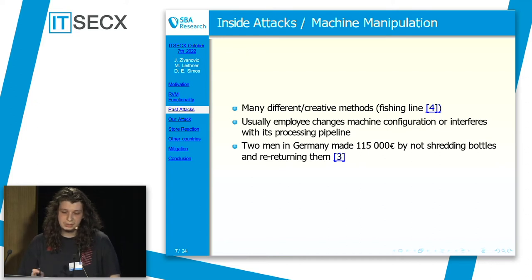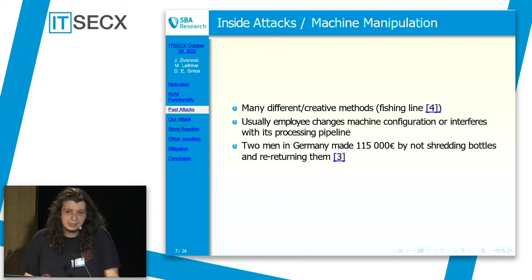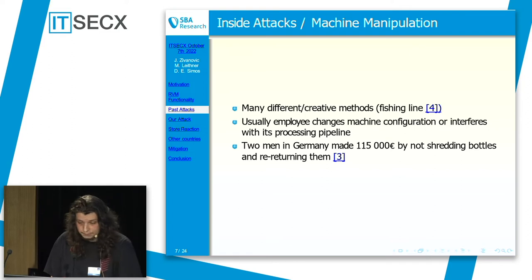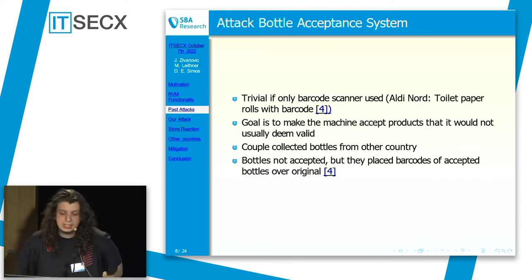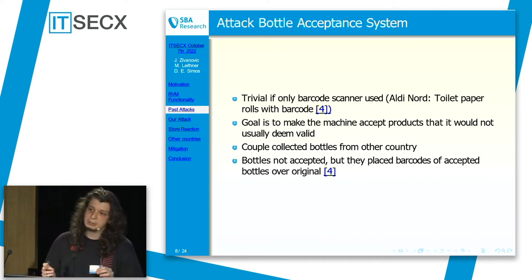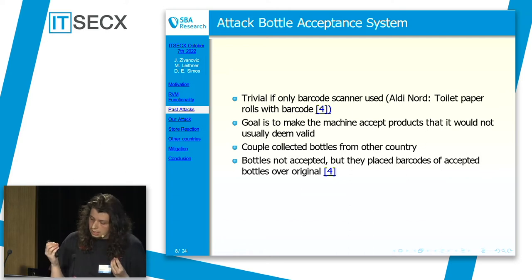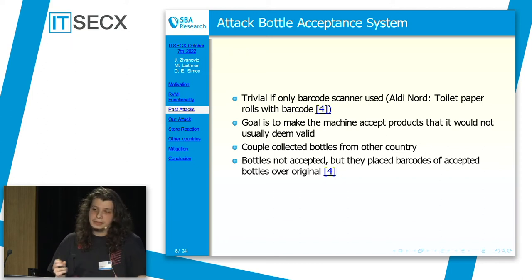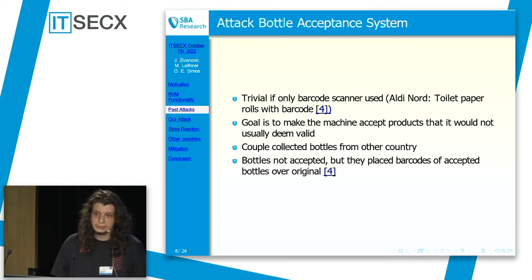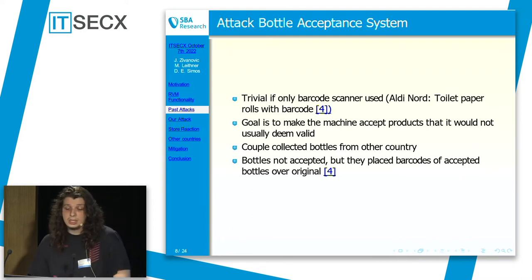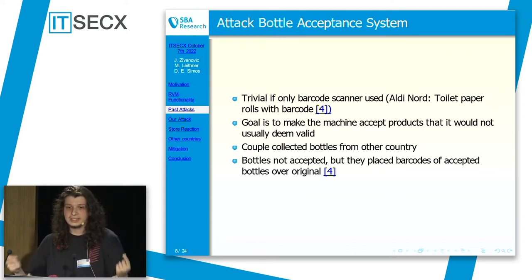These attacks are usually quickly spotted because people get greedy and go for large sums you normally wouldn't get from bottle returns. Then we have attacks on the bottle acceptance system, which in the simplest case is trivial if only a barcode scanner is used — it only checks the barcode. So it does not prevent you from taking, for example, a toilet paper roll and simply sticking a barcode from a bottle on it and throwing that into the machine. Attacks of this type try to trick the machine into accepting things that are not bottles or cans.